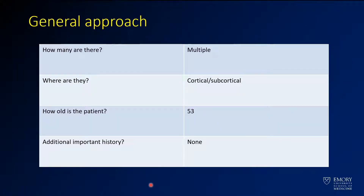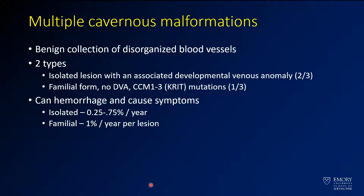When you think about this, you want to take a general approach: there are multiple lesions, predominantly cortical or subcortical, in a middle-aged patient in his 50s, with no additional history. Since those were classic for cavernous malformations, this is a case of multiple cavernous malformations.